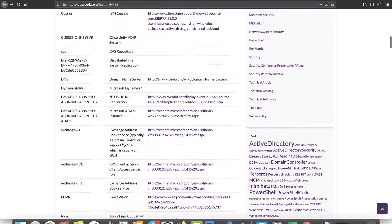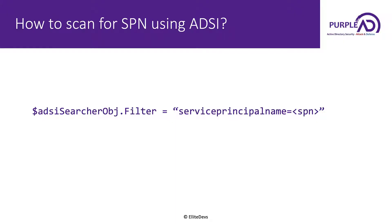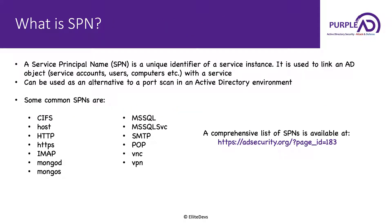So how can we scan for SPNs using ADSI? If you remember from our last video, while using ADSI Searcher we need to specify certain filters. Similarly, there is a filter for searching for a Service Principal Name, and it is very simple to use. All you need to do is set the filter equal to 'serviceprincipalname=SPN', replacing the SPN portion with the service principal name you want to search for. For this video, I've created a list of all SPNs from that page and put them in a text file, allowing us to automate scanning for various SPNs instead of scanning for a single SPN at a time.